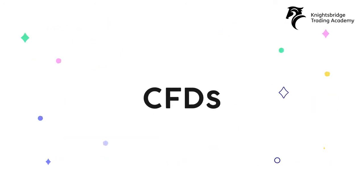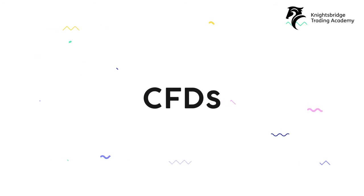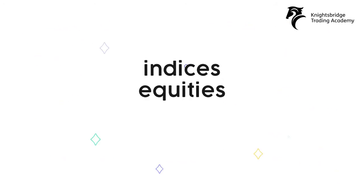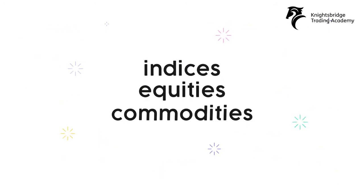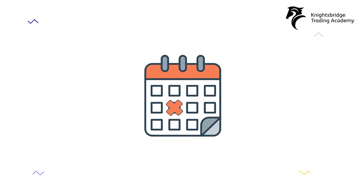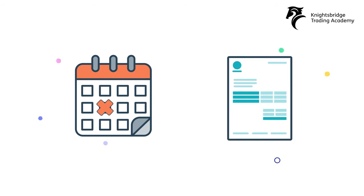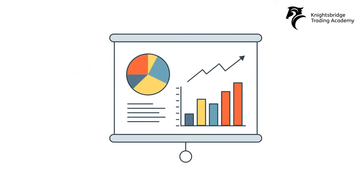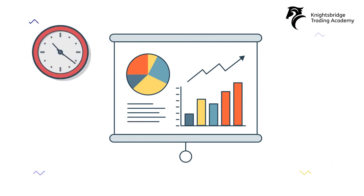CFDs are available on a range of different assets including indices, equities and commodities. Unlike futures contracts, CFDs have no fixed expiry date or contract size. Positions are renewed at the close of each trading day and may be rolled forward indefinitely, provided there is sufficient margin to support it.